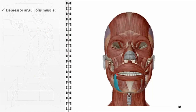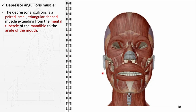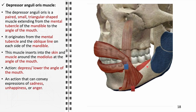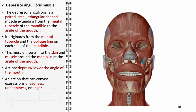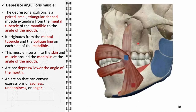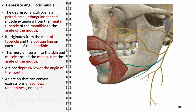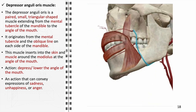The depressor anguli oris, a paired, small, triangular-shaped muscle, extends from the mental tubercle of the mandible to the angle of the mouth. Originating from the mental tubercle and the oblique line of each side of the mandible, it inserts into the skin and muscle around the modiolus at the angle of the mouth. Its primary function is to depress or lower the angle of the mouth, conveying expressions of sadness, unhappiness, or anger. It is innervated by the marginal mandibular branch of the facial nerve and receives blood supply from the inferior labial branch of the facial artery.